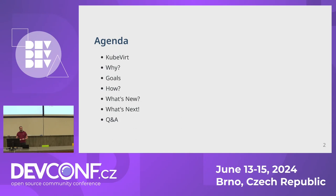I'm going to touch on what KubeVirt actually is, very briefly at a high level. I'm mostly going to be talking about the API and the CRDs that we provide, and the UX we provide for VM creation. I'll touch on why we're doing this, set out some initial goals, how we've gone about solving the problem, what's new since the previous talk, and what's coming next. Please hold questions to the end as we've only got 30 minutes.